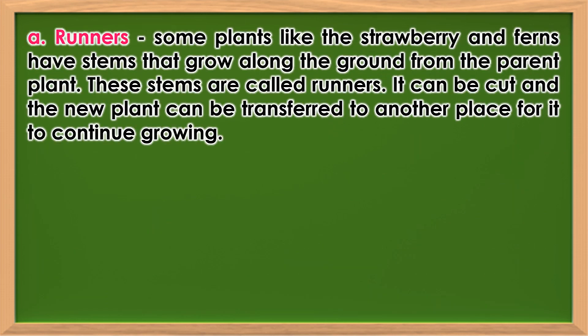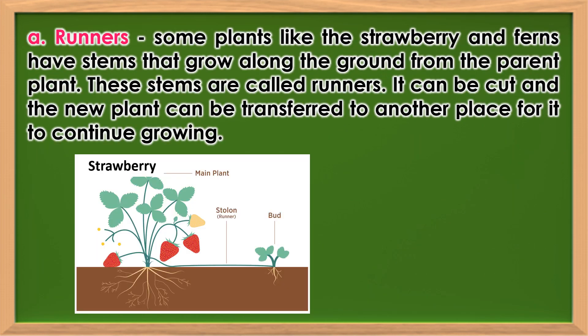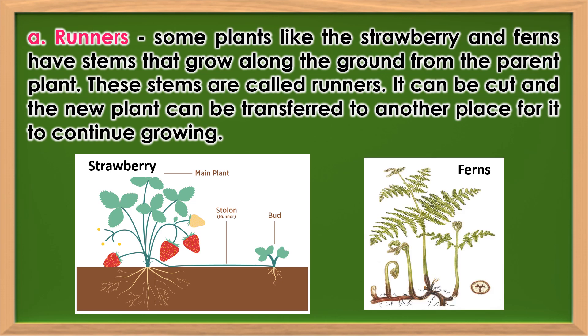Runners: Some plants like the strawberry and ferns have stems that grow along the ground from the parent plant. These stems are called runners. They can be cut and the new plant can be transferred to another place for it to continue growing.